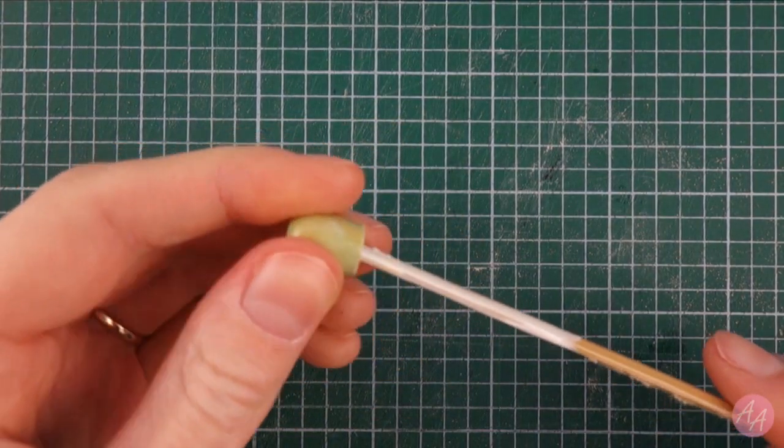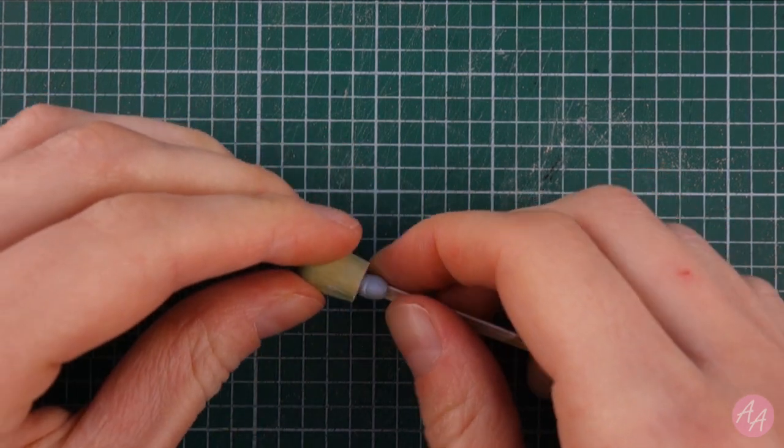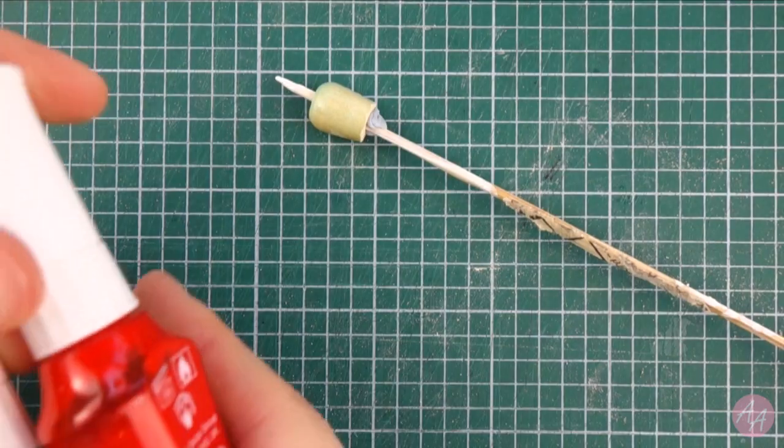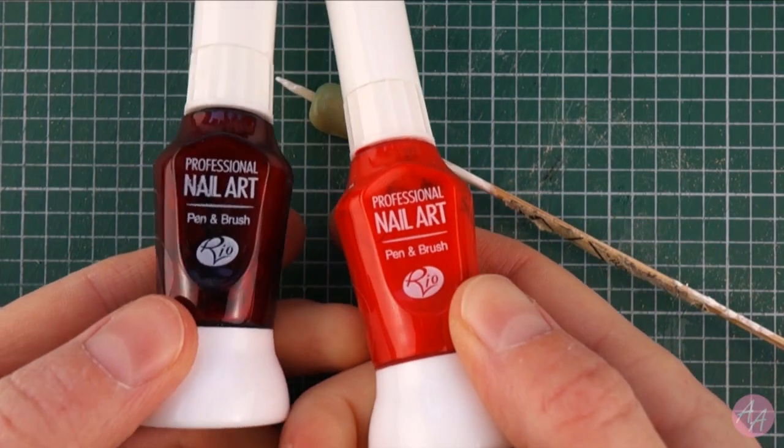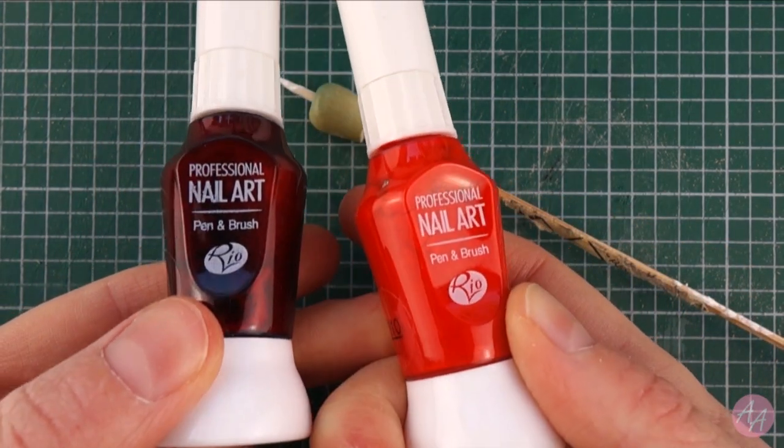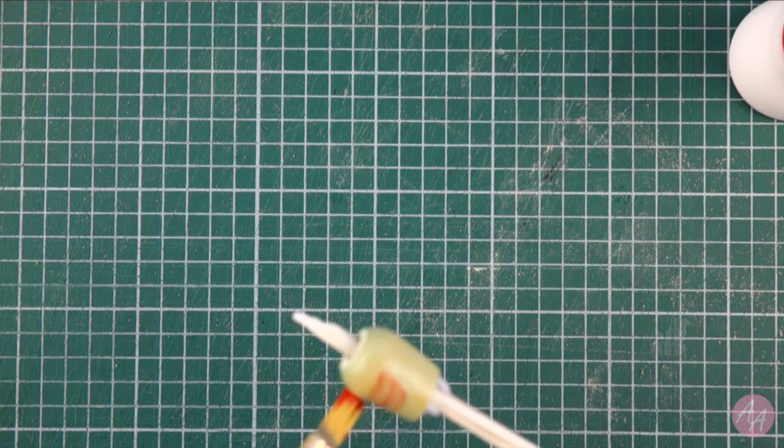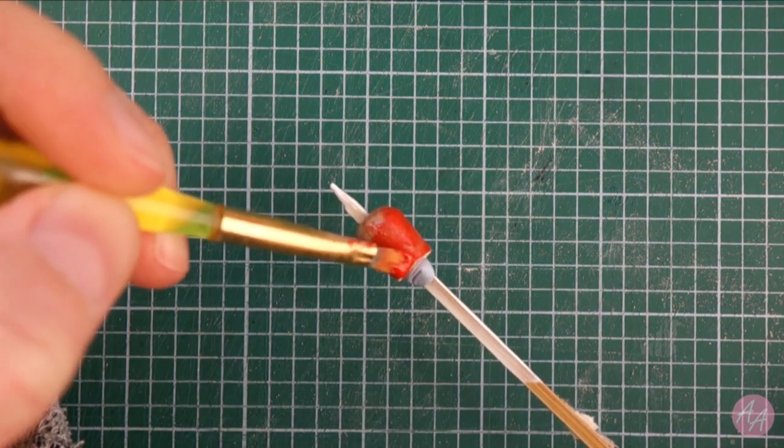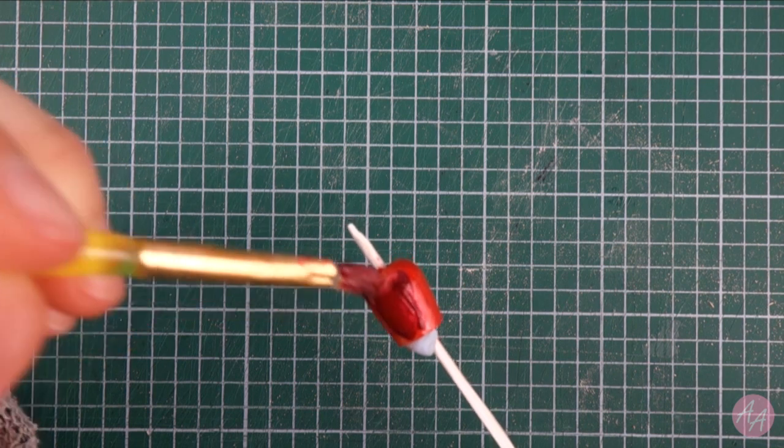The great thing about using a bead is that it has a hole in, which means I can stick it on the end of a skewer, which will make it much easier to paint. To paint the bead, I'm using nail varnish, as it will give a nice glossy finish, hopefully making it look like glass. I'm starting with the lighter red color, which requires a few coats, and then moving on to the darker red.